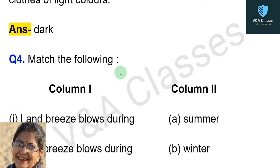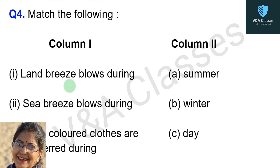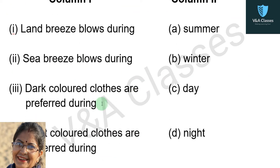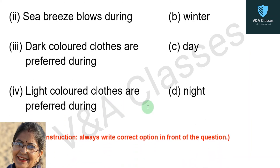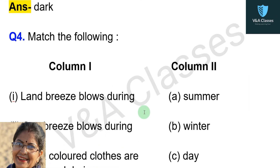Question number four: match the following. In column one there are statements; in column two there are terms. You have to match terms for each statement. First statement: land breeze blows during — Second statement: sea breeze blows during — Third statement: dark colored clothes are preferred during — Fourth statement: light colored clothes are preferred during —